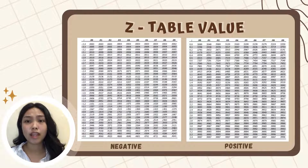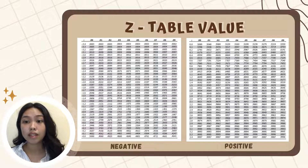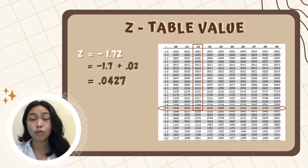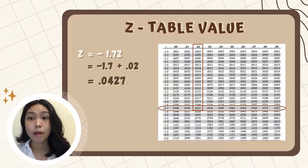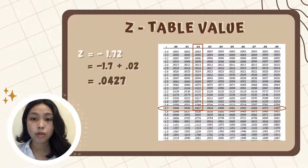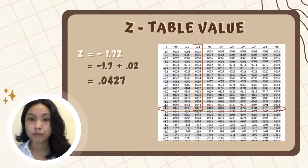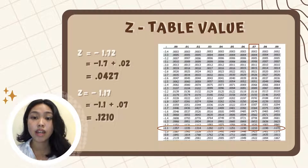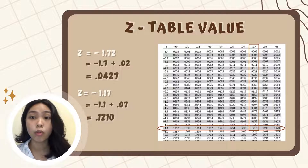Gamitin ulit natin yung Z-table, and hanapin natin yung corresponding values nilang dalawa. Since negative yung sign nila, gamitin natin yung negative Z-table para madetermine natin yung value. Una muna is yung negative 1.72 — kuhain natin yung negative 1.7 and then hanapin natin yung row niya, tapos yung remaining 0.02 naman, hanapin natin yung column part niya sa table. Makikita natin dito na nag-intersect silang dalawa sa 0.0427. Then, ulitin lang natin yun kay negative 1.17 — negative 1.1 plus 0.07 — ang equivalent value niya sa table ay 0.1210.